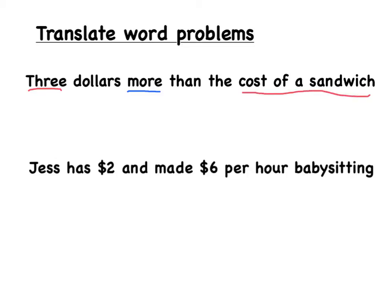So, the variable that we could use is C. Basically, C is the same thing as cost. So, it would be three dollars more than the cost of a sandwich. Our algebraic expression is 3 plus C.